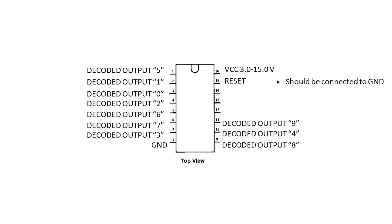Then we have the reset pin. The reset pin should be connected to the ground for running the circuit. But in some cases, maybe you need to control it — for example, if you need your LEDs to run through zero to number six, you need to connect your reset pin to pin number six, or output seven.